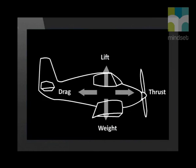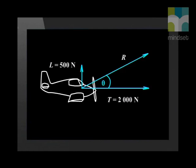Do you remember the aeroplane that accelerated and climbed? Here's the aeroplane again. The propeller creates a thrust force that moves the aeroplane forward, and the air flowing over the wings creates a lift force that balances the weight of the aeroplane. Now the pilot increases the power. The aeroplane moves faster and the air moving faster over the wings increases the lift force, so the aeroplane moves upwards.